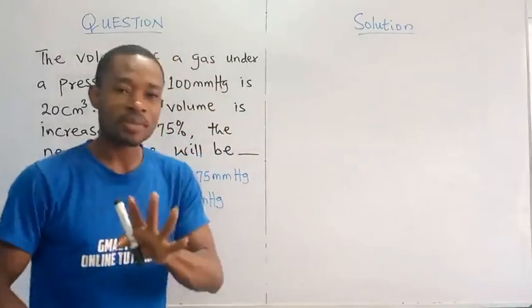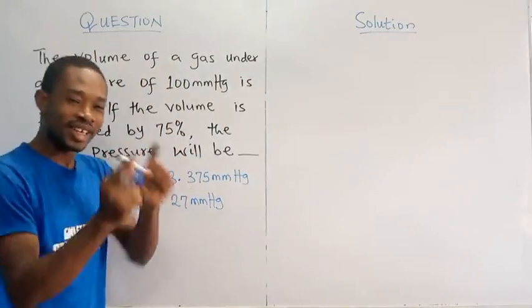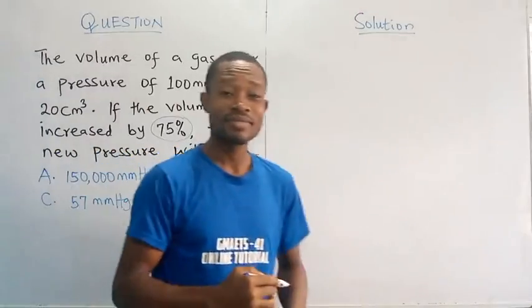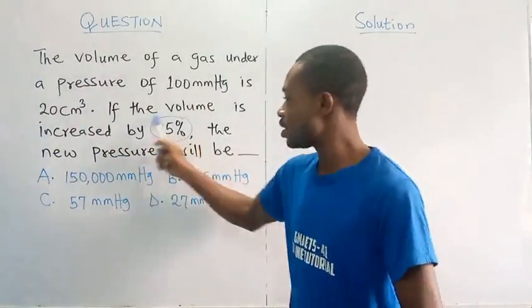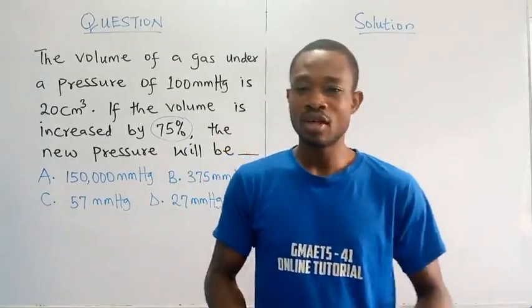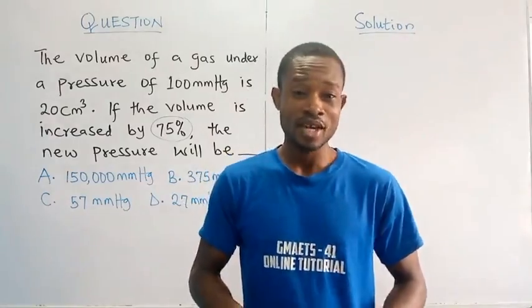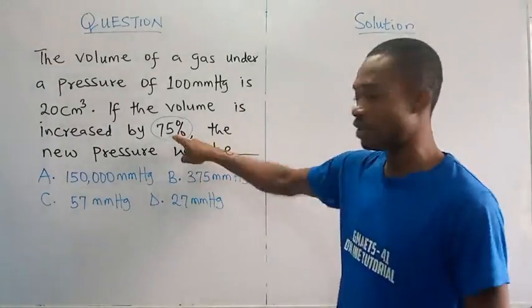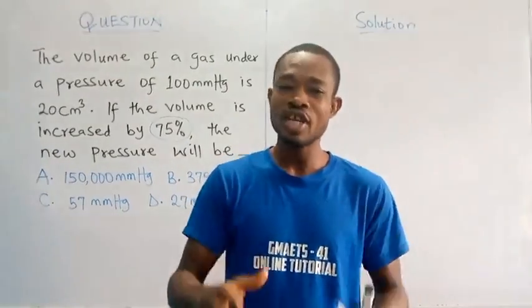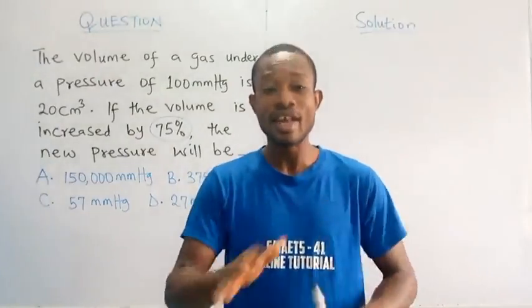Now the problem we have in this question, if this is given to a student, the area that could kind of shake the student is the interpretation of this 75%. Once someone is able to interpret the implication of this 75% increase in volume, you just sort of play around the question that we have here. And so I am going to quickly explain this. And this is why GMATS41 will always appreciate and talk about the value of our basic school level of learning.